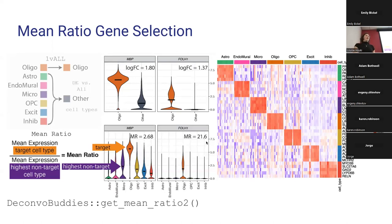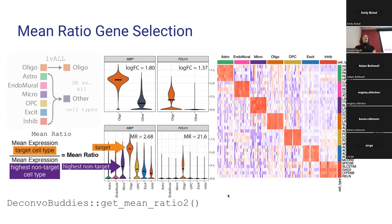We've also found mean ratio useful for other applications in examining single cell data. I've implemented this as part of our deconvobuddies package in a function called getMeanRatio2. This is a strategy we're excited to present in this paper.